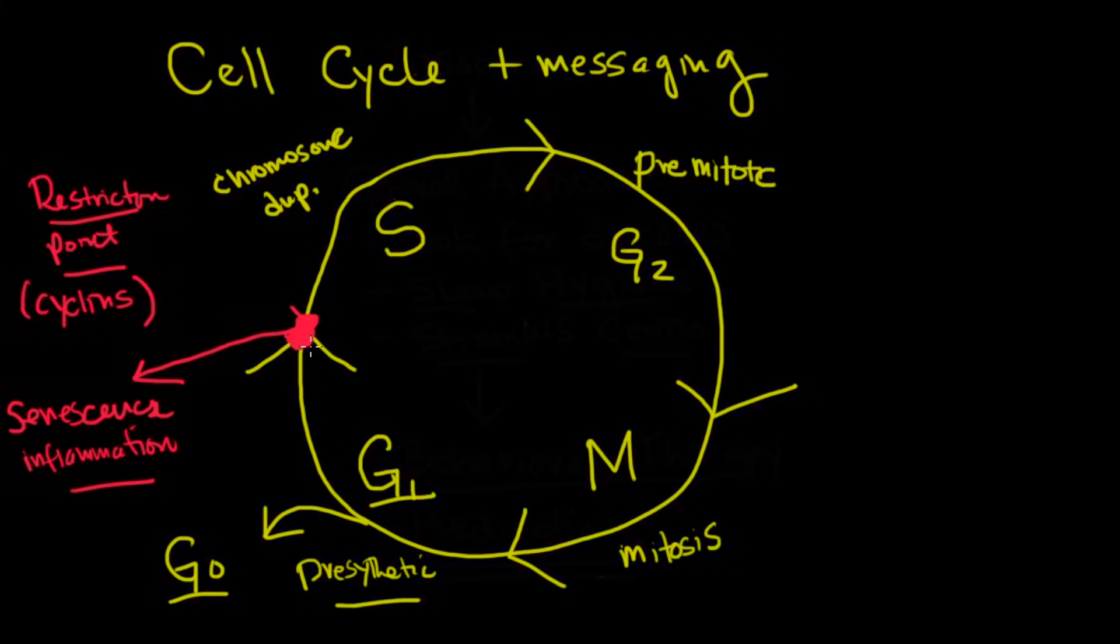So before it copies it, it's going to say, you know what, the cell is not ready to divide. We should not be dividing this cell. We're going to replicate errors. It's not a good idea. So it exits the cell right here before the S phase. This is called the restriction point, and it's cyclins, which mediate that.